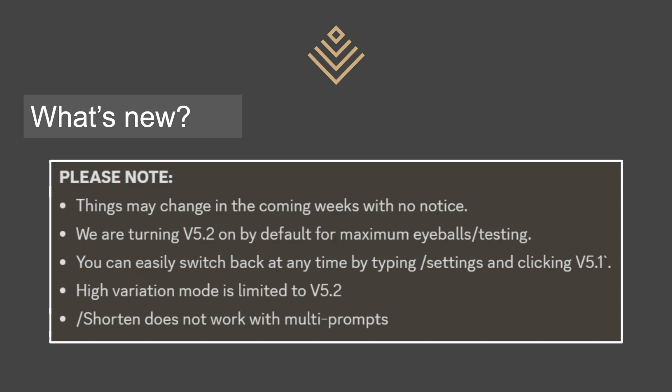I did not bother to do the last one because it was just 'humanoid' and that would not have been something I was interested in. Please note some additional information: things may change in the coming weeks with no notice. V5.2 is on by default, meaning you do not need to enter that parameter in your prompt. However, if you want to use version 5.1, you can go to settings and click that button. High variation mode is limited to 5.2 — it only works with 5.2. And lastly, the new shorten command does not work with multi-prompts.